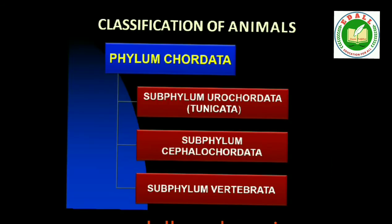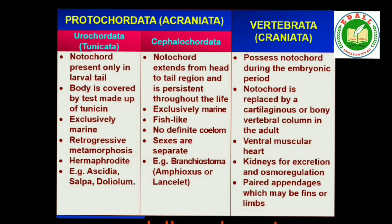Phylum Chordata is divided into three subphyla: Urochordata or Tunicata, Cephalochordata and Vertebrata. Subphyla Urochordata and Cephalochordata are often referred to as protochordates and are exclusively marine. In Urochordata, notochord is present only in the larval tail, while in Cephalochordata it extends from head to tail region and is persistent throughout their life. Examples: Urochordata — Ascidia, Salpa, Doliolum. Cephalochordata — Branchiostoma (also called Amphioxus or Lancelet).